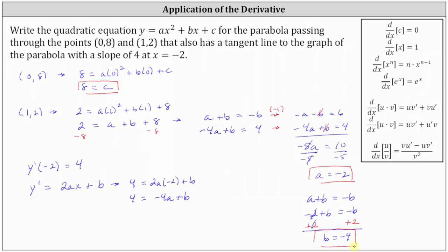Now that we have the values of a, b, and c, we know the equation for the quadratic function in the form y equals ax squared plus bx plus c. Our equation is y equals negative 2x squared minus 4x plus 8, since a is negative 2, b is negative 4, and c is positive 8.